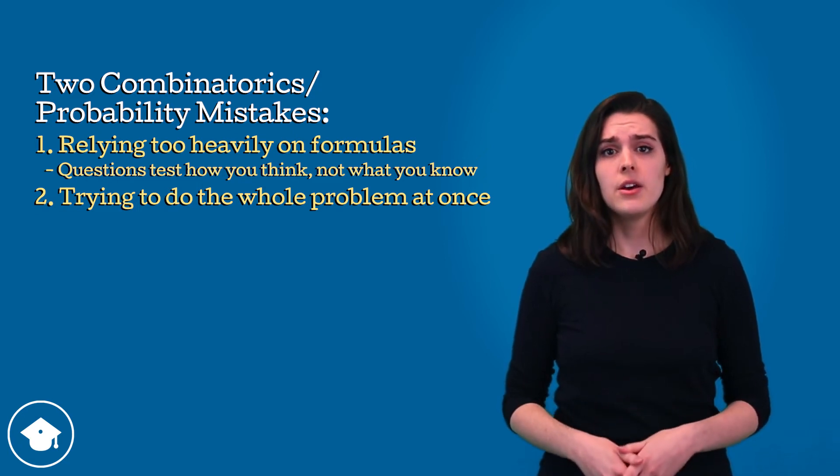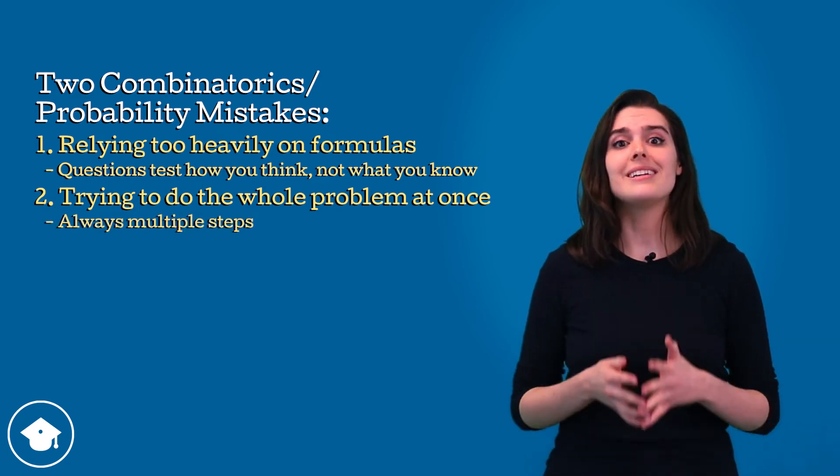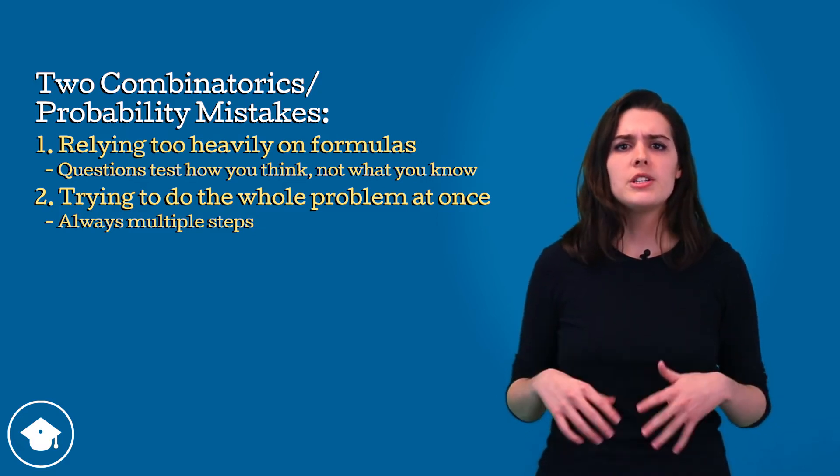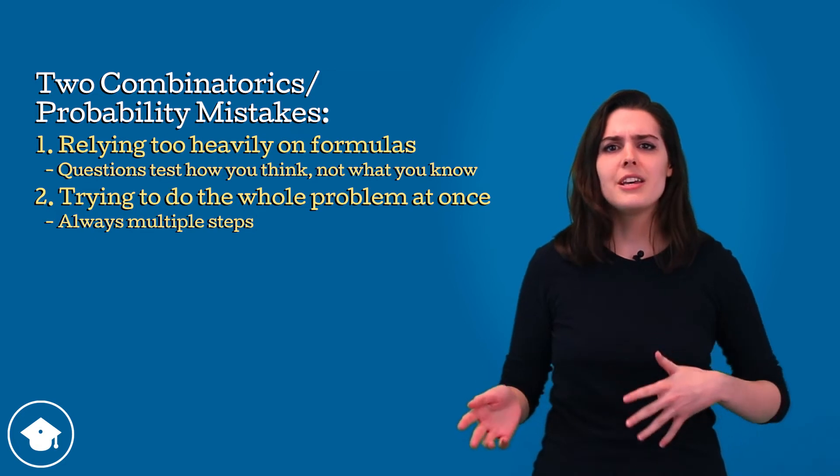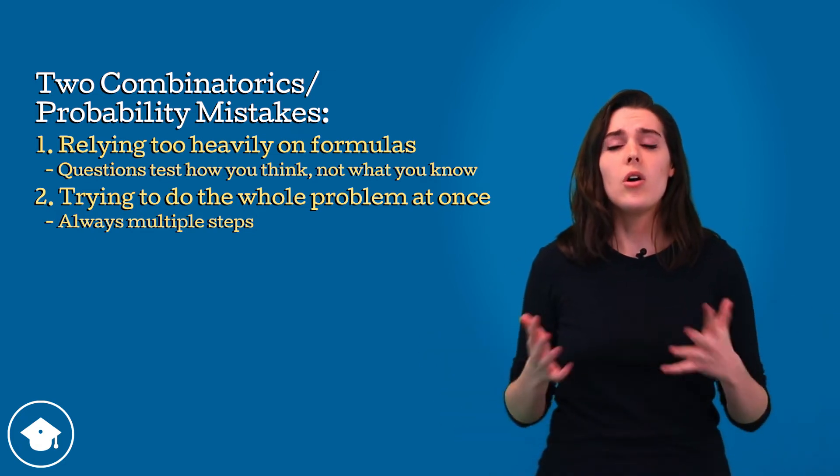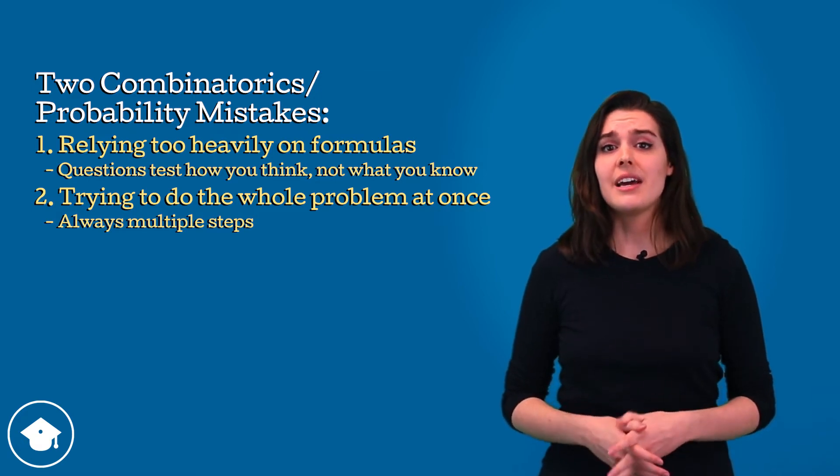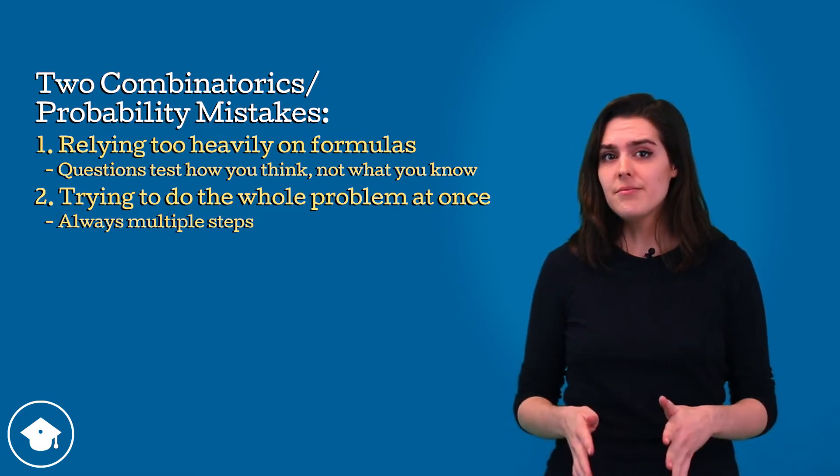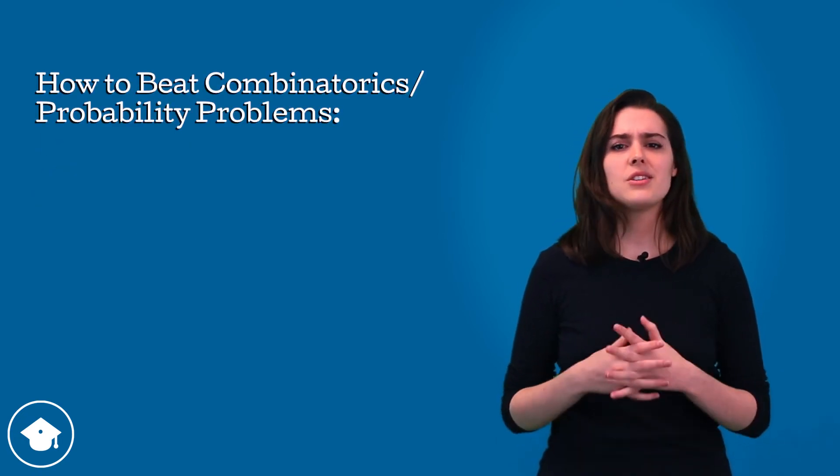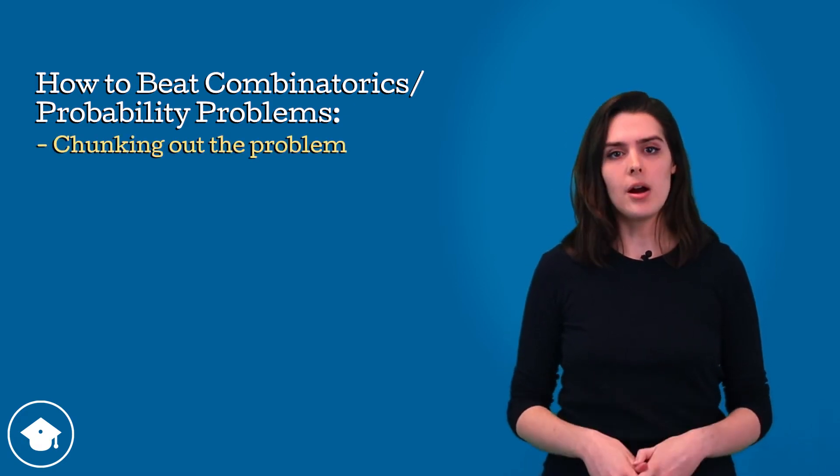Which brings us to the second mistake. No combinatorics or probability problem is going to be as simple as a single step. You're never going to go, it's a combination! Plug the numbers you're given into the combination formula and then be done. There will always be something else that doesn't fit nicely into an equation that you're going to need to figure out yourself. Now remember, if it seems easy, you're probably doing it wrong. So how can we attack these complicated problems? Our best bet is by chunking out the problem.